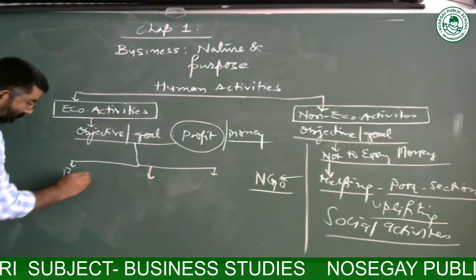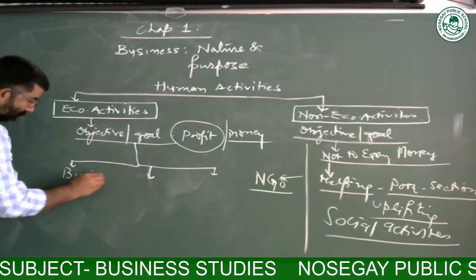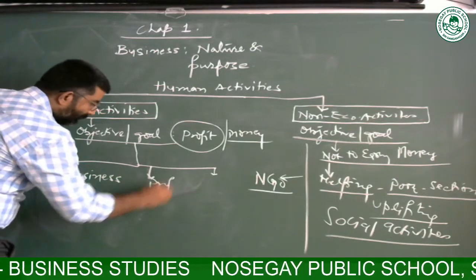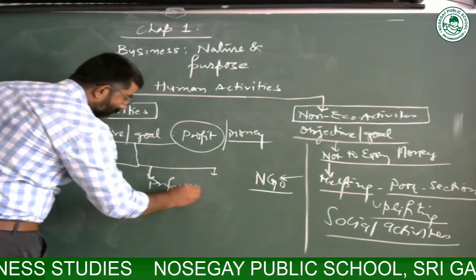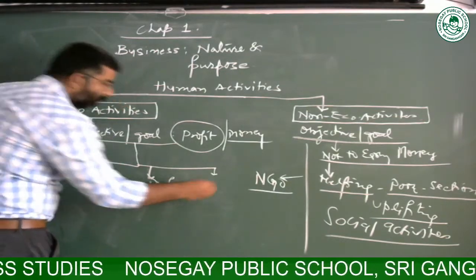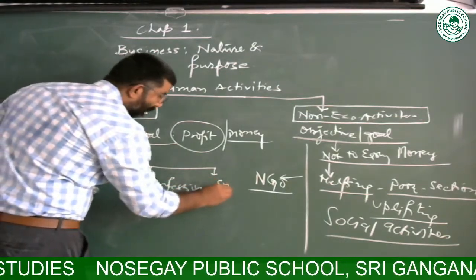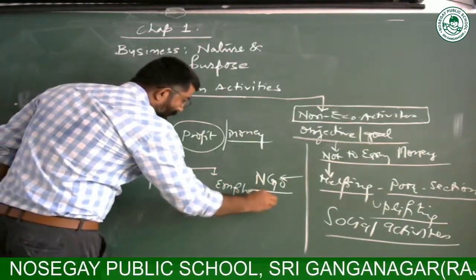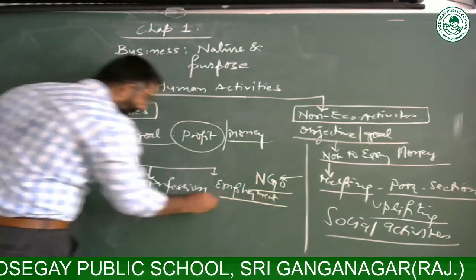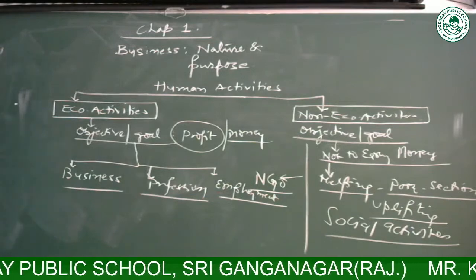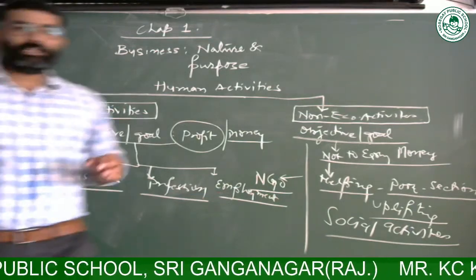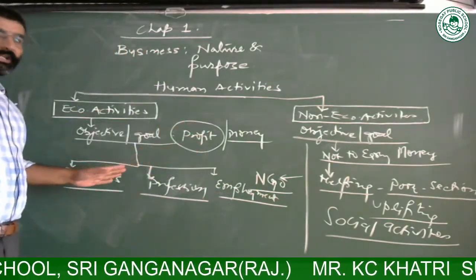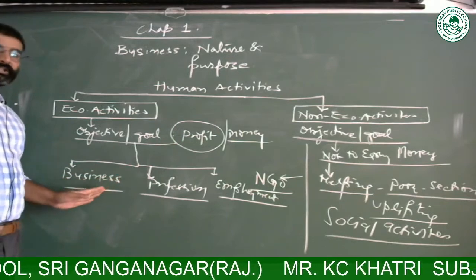The three branches are: one is called Business, the second one is Profession, and the third one is Employment. These are the three economic activities we have to discuss in our syllabus. The major part is we are going to discuss about Business.